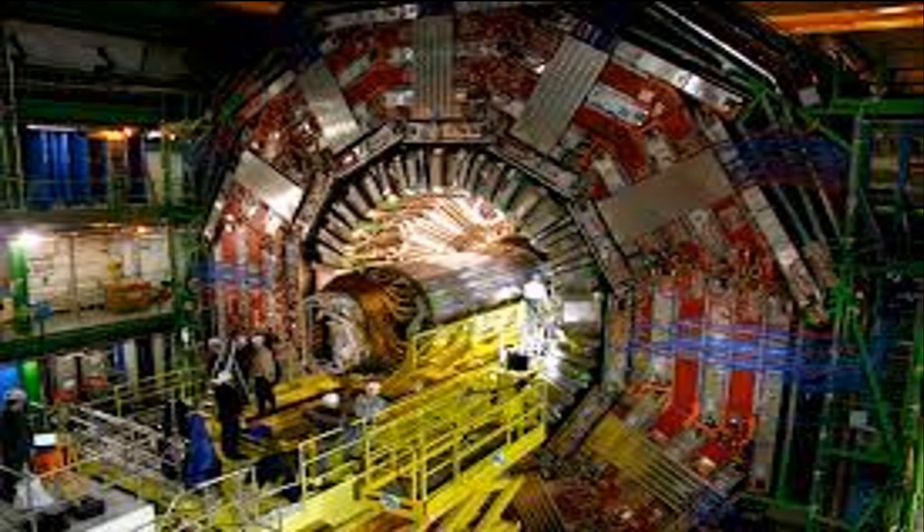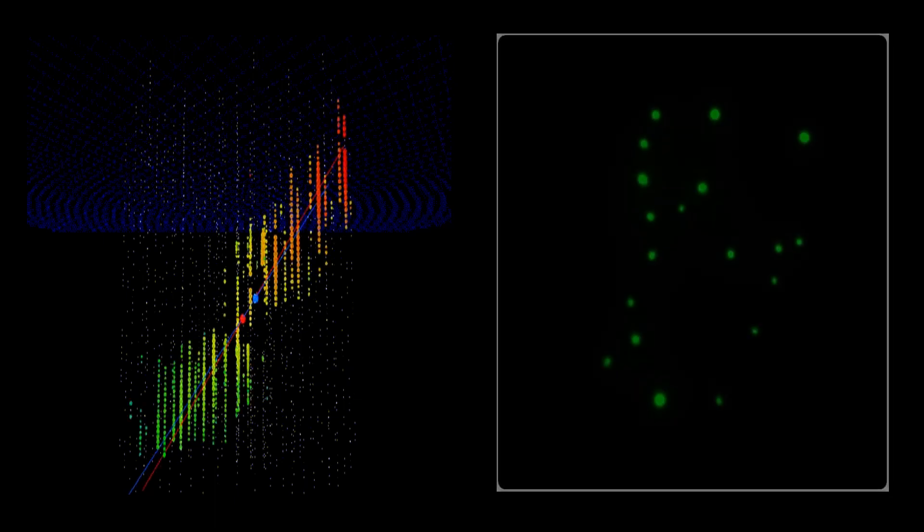Particles in the so-called quantum world cannot be seen with the naked eye or directly observed by any other means. The only way to confirm their presence is by using detectors. These detectors are devices that produce effects that can be directly observed by us when they interact with these quantum particles. Examples of these effects include lines in the cloud chamber, the glowing of fluorescent screens, and so on.